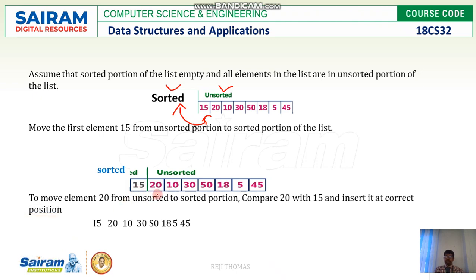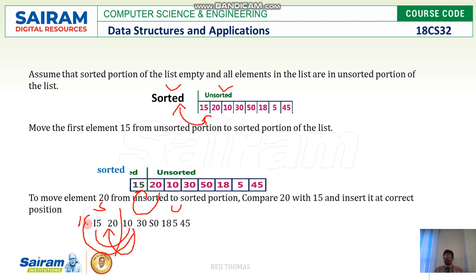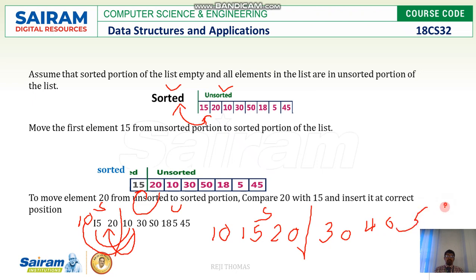The next element in the unsorted array is 20, which should be placed in the right place in the sorted array. Now we have two elements. Again, repeat with the next unsorted element: can we place 10 here? No, because 10 is less than 20 — not the right place. Comparing with 15: 10 is less than 15, so we move further. 10 is placed at the front, giving us 10, 15, 20 in sorted, and 30, 40, 5, 45 remaining in unsorted.